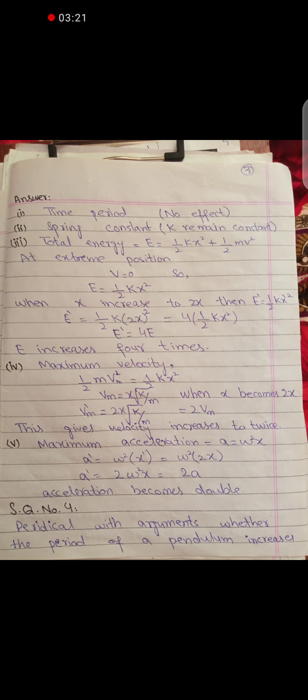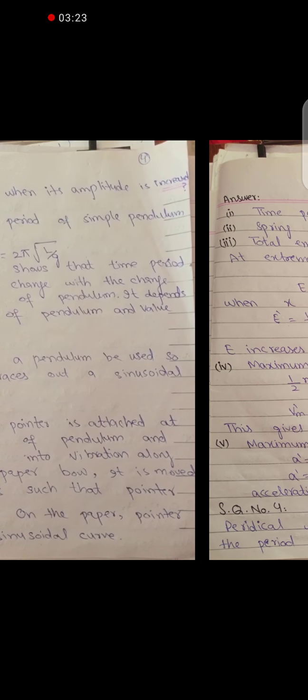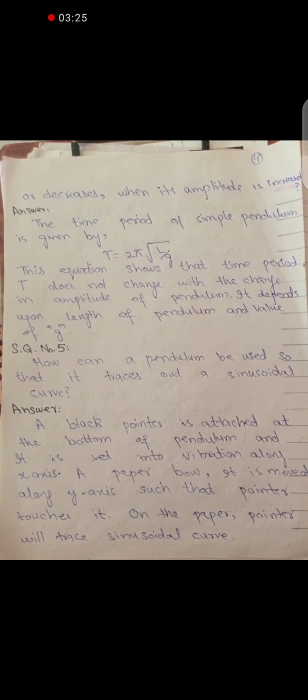Question number 4: A student with a stopwatch argues whether the period of a pendulum increases or decreases when its amplitude is increased. The time period of a simple pendulum is given by T equals 2π under root L over g. This equation shows that the time period does not change with the amplitude. It depends upon the length of the pendulum and the value of g.